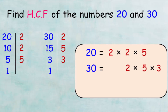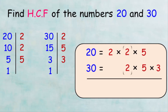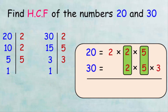Let's see the equal factors placed below each other. As we see, the prime numbers 2 and 5 are common factors between the numbers 20 and 30. So the highest common factor between 20 and 30 is 2 times 5, which is equal to 10. So our HCF is 10.